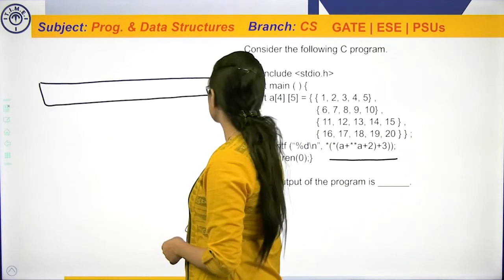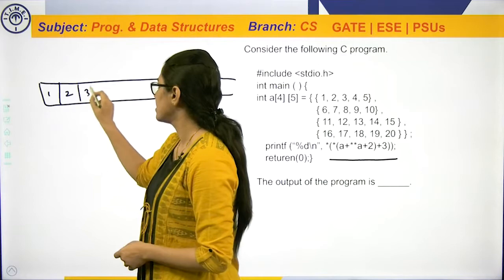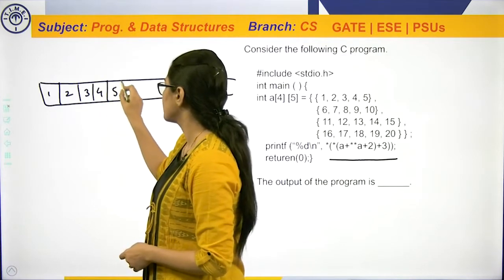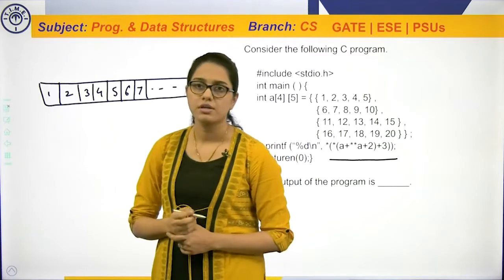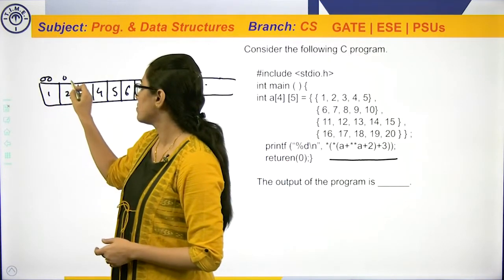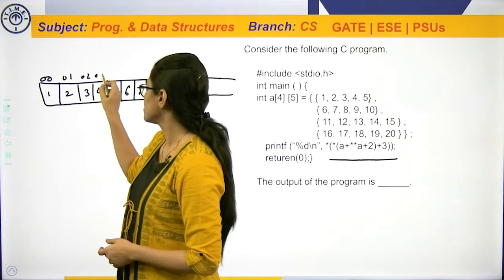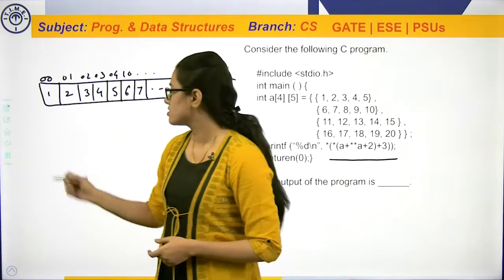So, array will be stored something like this and the numbers are 1, 2, 3, 4, 5, 6, 7 and so on. Array index will start with 00, 01, 02, 03, 04, 1, 0 and so on.